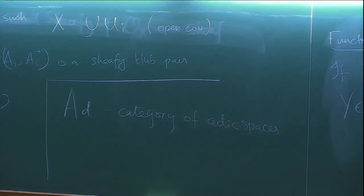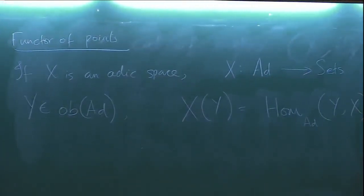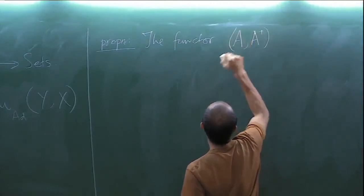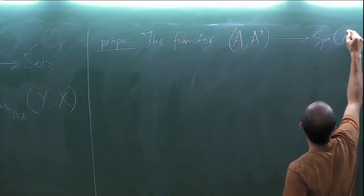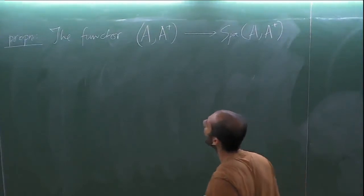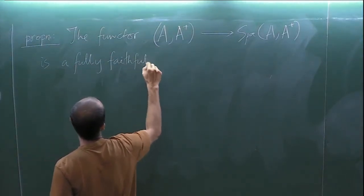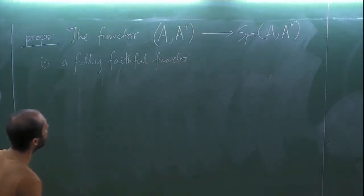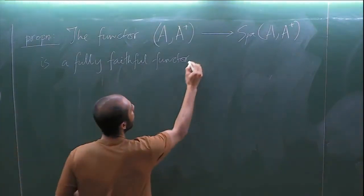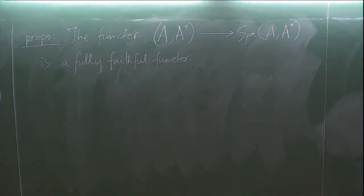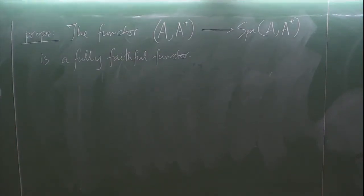We have a proposition — which is not hard to prove — that the functor spa, which takes a sheafy Huber pair (A, A+) to the affinoid adic space spa(A, A+), is a fully faithful functor. This means that morphisms between spa(A, A+) and spa(B, B+) are exactly the morphisms of Huber pairs from (B, B+) to (A, A+).